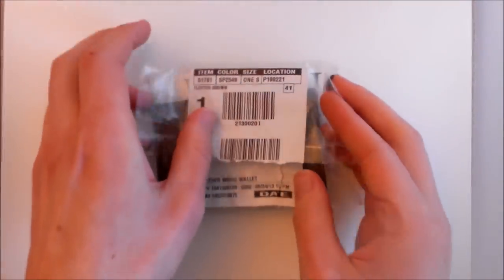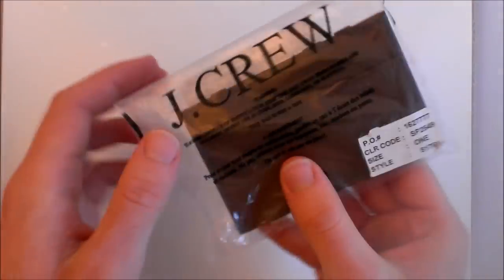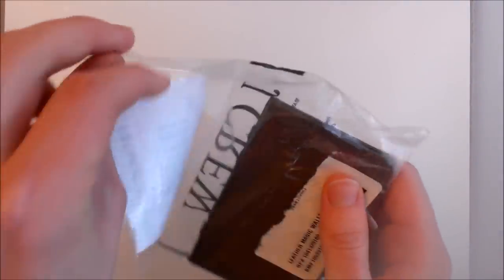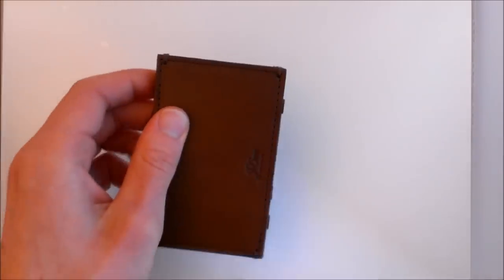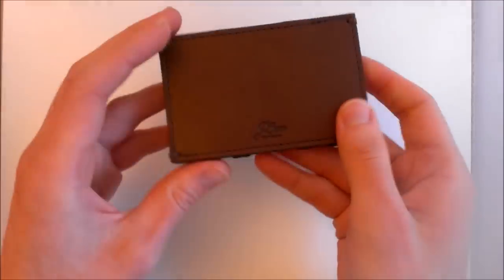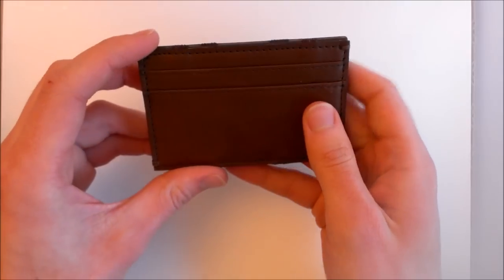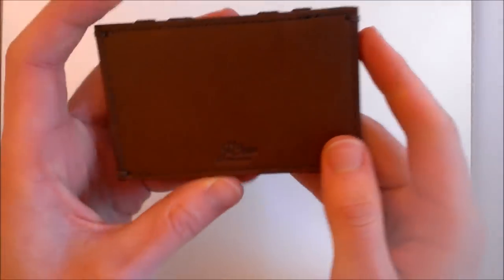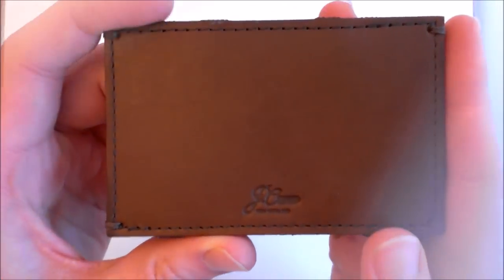I've already opened this up just to make it a little quicker and easier, and you can see it comes in this J.Crew branded plastic bag. As we take the wallet out now, we'll take a look at it. You can see it's a pretty minimal design, simple, not too much going on. We've got a couple of card slots on the front here, and we turn it over and we've got the J.Crew embossed logo down there.